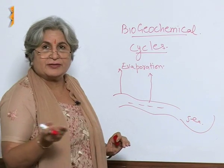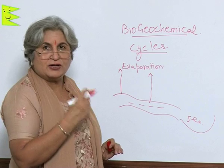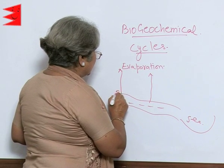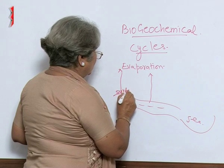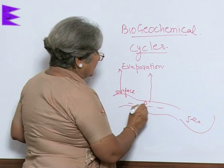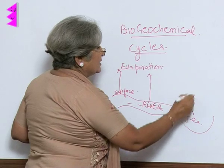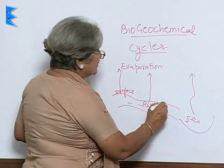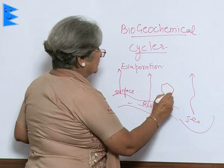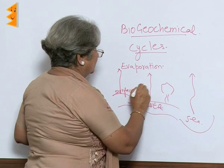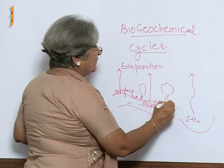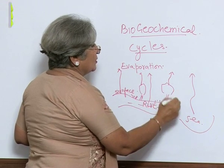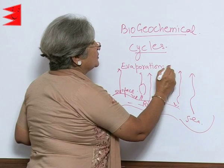There is also evaporation from the surface of soil, because soil also has moisture. From the surface, from rivers, from the sea, water is going up. Then there are trees and small grasses — from everywhere there is loss of water, and this loss of water is called transpiration.